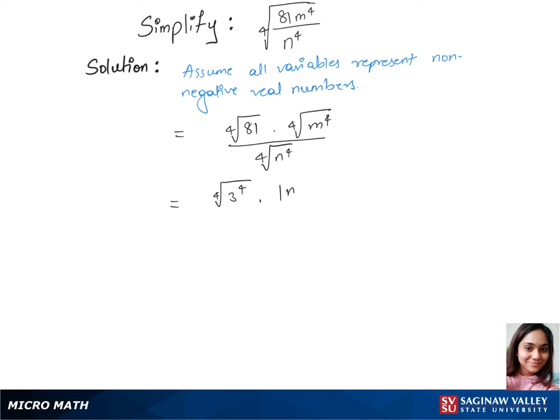The power 4 gets cancelled here, so we have modulus of m since it's a non-negative variable, and same thing here, modulus of n. Now we have 3 times m over n. This is our final answer.